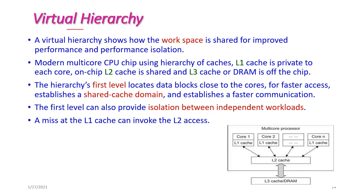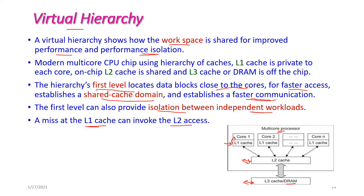The cache hierarchy shows how workspace is shared for improved performance and isolation. There are three levels: L1 cache (close to cores in a multicore processor), L2 cache (shared across the entire multicore processor), and external cache (DRAM). The first level locates data blocks close to cores for faster access, establishes a shared cache domain for faster communication, and provides isolation between independent workloads. A miss in L1 cache invokes L2 cache. That concludes the virtualization of CPU, memory, and I/O devices.